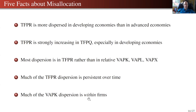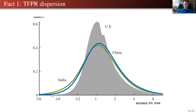Here's the TFPR dispersion. This is the US distribution — TFPR on the x-axis across plants in US manufacturing. Notice there's a ton of dispersion, so whatever your theory is, it can't be that the US has perfectly equated TFPR across firms. This is within industries — within four-digit industries.